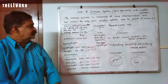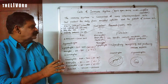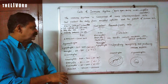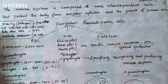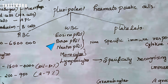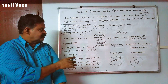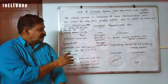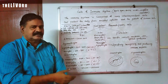The most important cells in the immune system are called WBC — White Blood Cells. The types of WBC include Eosinophil, Basophil, Neutrophil, Monocyte, and Lymphocyte. These are all different branches of WBC.